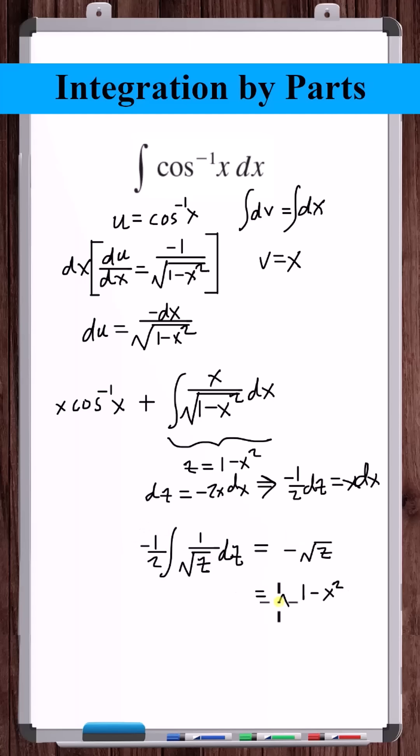But z is equal to 1 minus x squared. Therefore, the final answer is capital F of x. We just need to add the arbitrary constant.